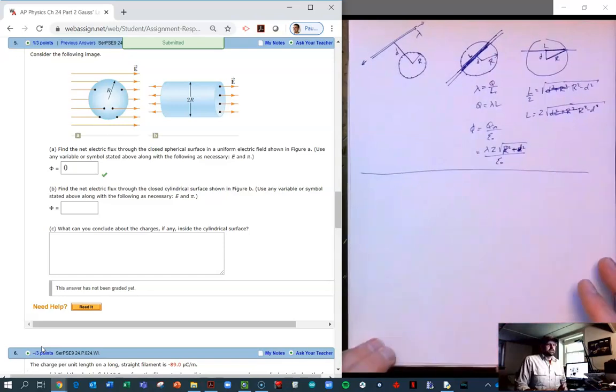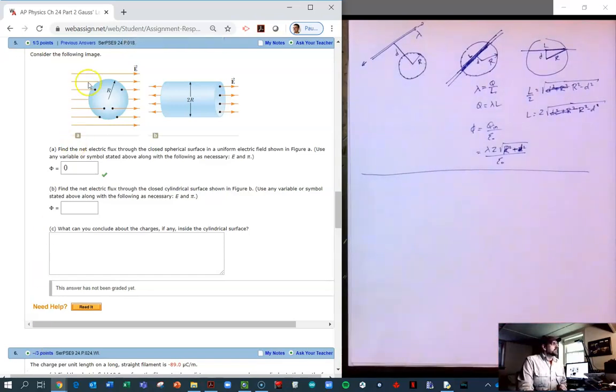Okay, and we know that there's no charge on the inside because the same number of electric field lines come into the sphere as leave. This is not true for the cylinder.